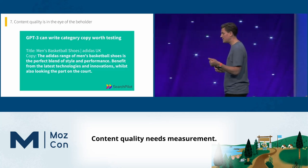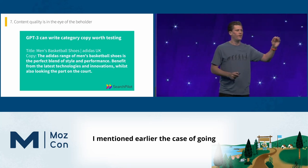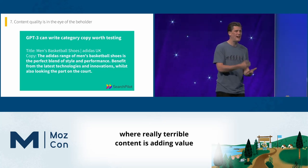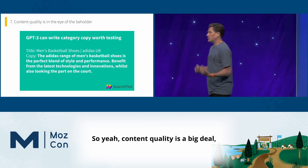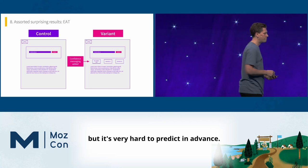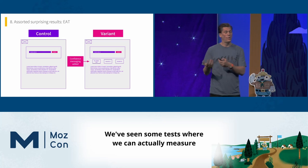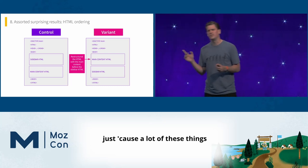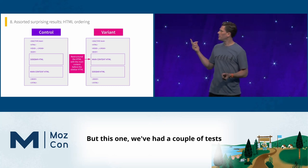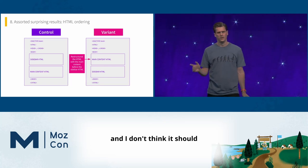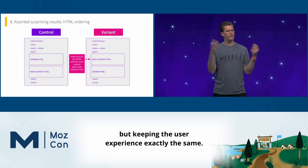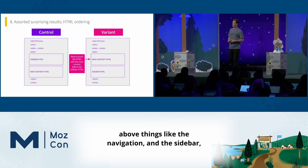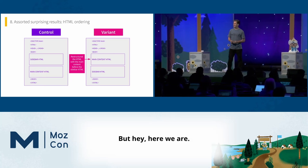Lesson seven: content quality needs measurement. We've definitely seen cases — I mentioned earlier the case of going from boilerplate content to individually written unique content per page and seeing a big benefit. But we've also seen cases where really terrible content is adding value and removing it was a net negative. Content quality is a big deal, but very hard to predict in advance. EAT is a thing. And the one I include because it surprises people: just moving HTML around but keeping the user experience exactly the same — changing CSS so the page looks identical, but moving the main body content up in the HTML above navigation and sidebar. I don't think that should work in the third decade of the 21st century, but here we are.